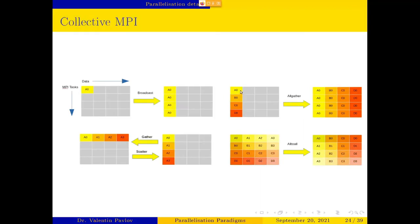Allgather does the same as gather but all the processes get the information, so allgather is like gather but instead of the information going to a single processor, all of them have it. All-to-all is basically a matrix transpose — if at the beginning each process has one row of data, after the all-to-all each process will have one column of the original data.